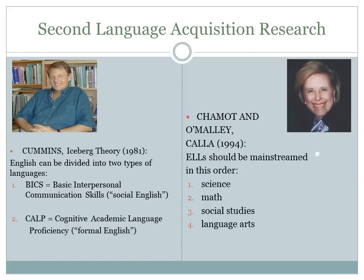ELLs should be introduced to mainstream social studies classes third because of the language demands in the reading material in particular. Last but not least, language arts should be taken, because of the various types and functions of language needed to read and write. The functions of literary text are more varied than for any other content area.